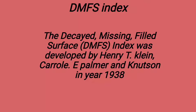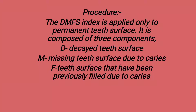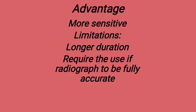DMFS index stands for Decayed, Missing, Filled Surface index. It was given by Henry T. Klein, Carroll Palmer, and Knutson in the year 1938. While DMFT looks at the tooth as a whole, DMFS looks at the surface — how many surfaces are decayed, missing, and filled. DMFS index is applied only to permanent teeth, composed of three components: D for decayed surface, M for missing surface due to caries, F for filled surface previously filled due to caries. Advantage: more sensitive. Limitation: longer duration and requires radiographs to be fully accurate.